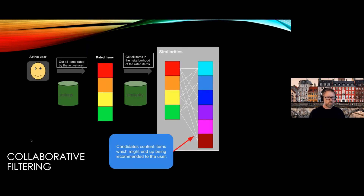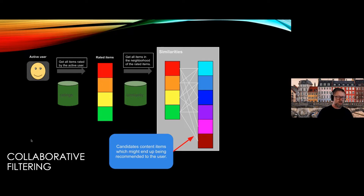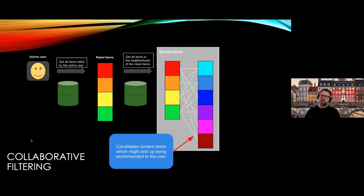Collaborative filtering works similarly, but instead of using content data, you use behavioral data — the interactions between the user and the items. In a collaborative filtering model, you find the items the user has rated or interacted with and then find similar items. Based on those similar items, you make recommendations.